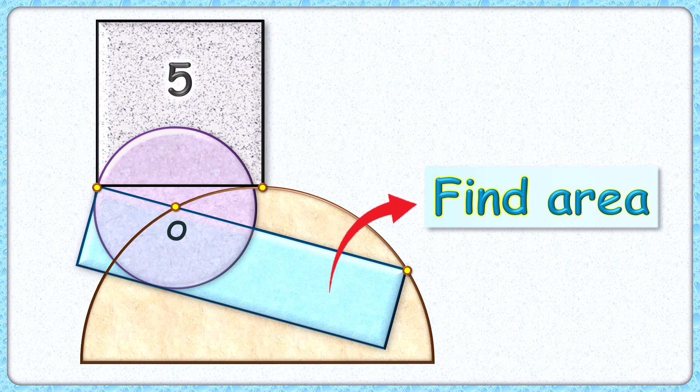Welcome everyone to this interesting question where given to us is a square, a circle, a rectangle, and a semicircle. The side length of the square with area 5 centimeter square is tangent to the semicircle. The vertex of a square and the rectangle lies on the circumference of the circle.